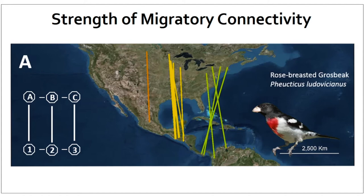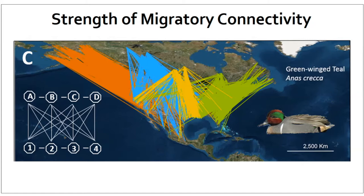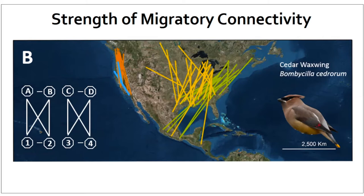For example, strong connectivity occurs when populations remain together between seasons, like in the case of this rose-breasted grosbeak. Weak connectivity occurs when populations do not remain together between seasons — when, like this green-winged teal, breeding populations mix across the winter range. And of course, in the real world, we see all kinds of variation beyond these two extremes.